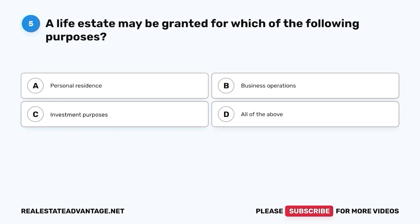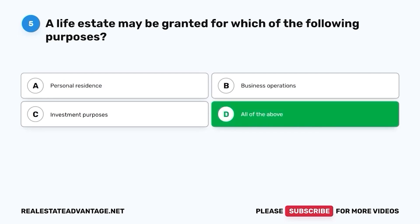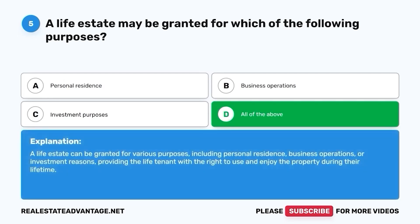Question 5. A life estate may be granted for which of the following purposes? A. Personal residence. B. Business operations. C. Investment purposes. D. All of the above. The correct answer is D. All of the above. A life estate can be granted for various purposes, including personal residence, business operations, or investment reasons, providing the life tenant with the right to use and enjoy the property during their lifetime.